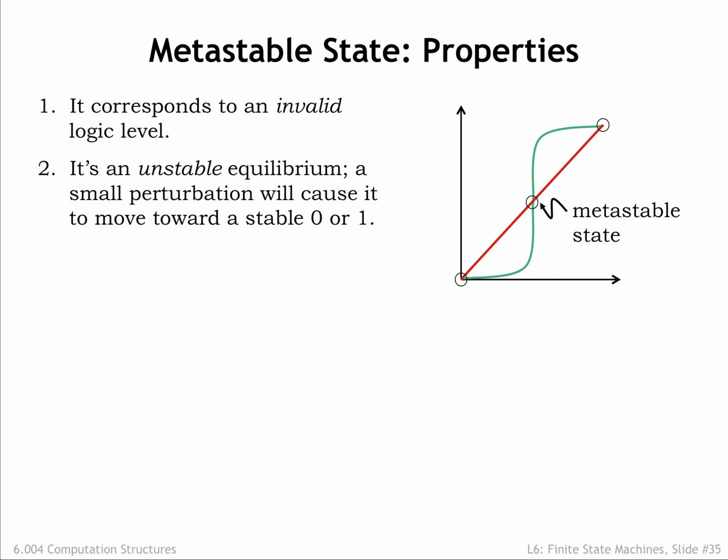It's an unstable equilibrium and will eventually be resolved by a transition to one of the two stable equilibrium points. You can see from the graph that the metastable voltage is in the high-gain region of the VTC, so a small change in VIN results in a large change in VOUT. And once away from the metastable point, the loop voltage will move towards zero or VDD.